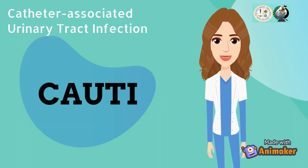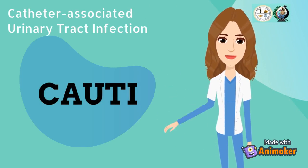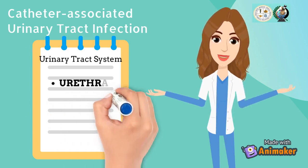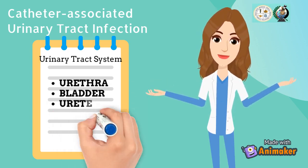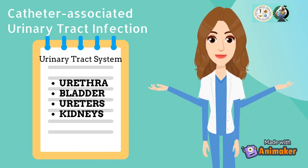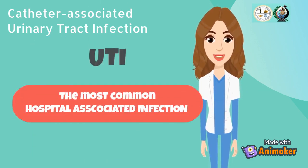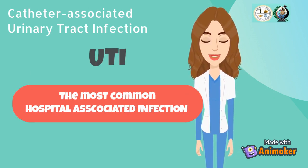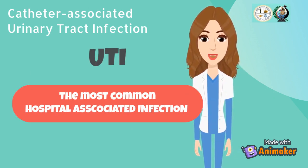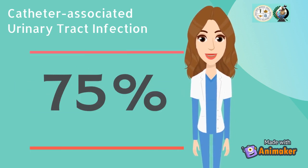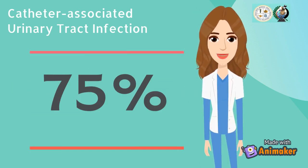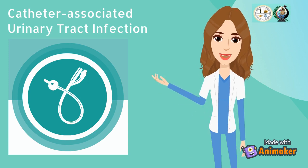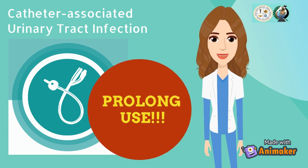The next healthcare-associated infection is CAUTI, or the catheter-associated urinary tract infection. This infection involves any part of the urinary system which includes the urethra, bladder, ureters, and kidneys. UTIs are the most common type of healthcare-associated infection reported to the National Healthcare Safety Network or the NHSN. Among UTIs acquired in the hospital, 75% are associated with a urinary catheter.